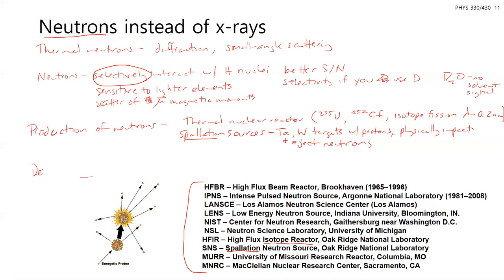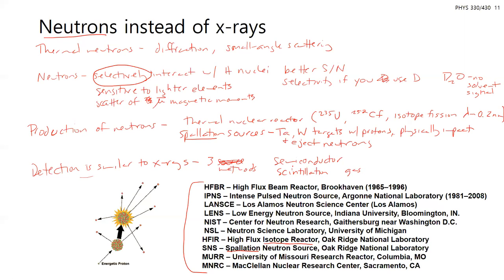Looking at this list of neutron sources within the United States, Oak Ridge National Lab in Tennessee has both a thermal nuclear reactor source and a spallation source. Just like with x-rays traveling to a synchrotron, for neutrons you also have to travel and schedule time on these reactors and sources, which is why it's more of a specialized technique. Detection is similar to x-rays — you can use the three methods: semiconductor, scintillation, or gas-type detectors.